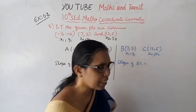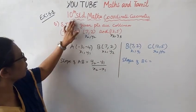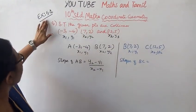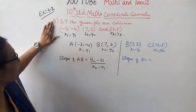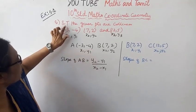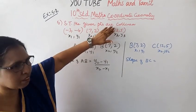Hello students, welcome to Maths and Tamil channel. Tenth standard Maths, Coordinate Geometry, Exercise 5.2, fifth sum: Show that the given points are collinear.